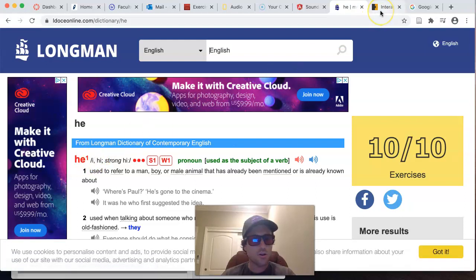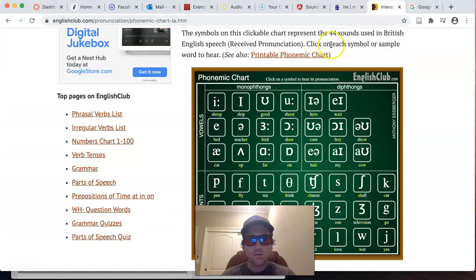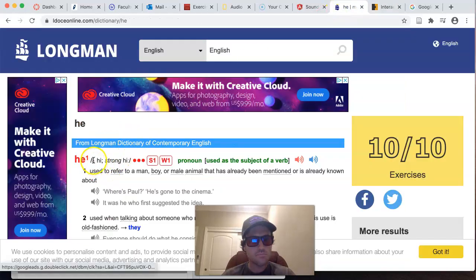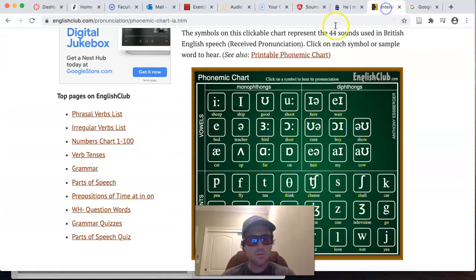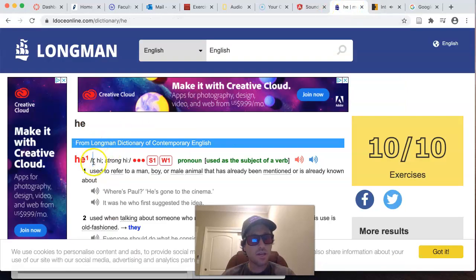This right where this dash is, this is the vowel sound. And you can go back to your chart. And you can find it there. See how it matches up? And you can press it for good measure. That's the vowel sound for he.